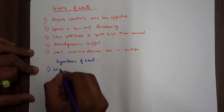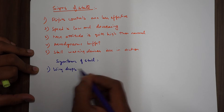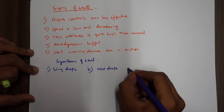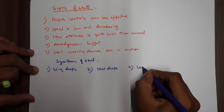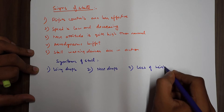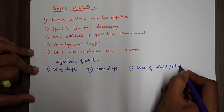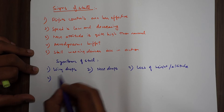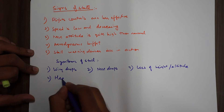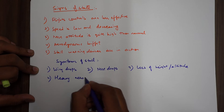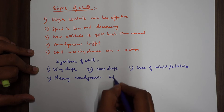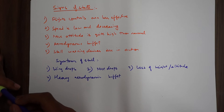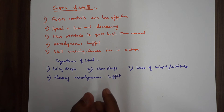Now the symptoms of stall — what happens just after the stall. First, the wing drops. Second, the nose drops. Third, there is loss of height or altitude. Fourth, there is heavy aerodynamic buffet — heavier than the buffet that was experienced as a sign before the stall.